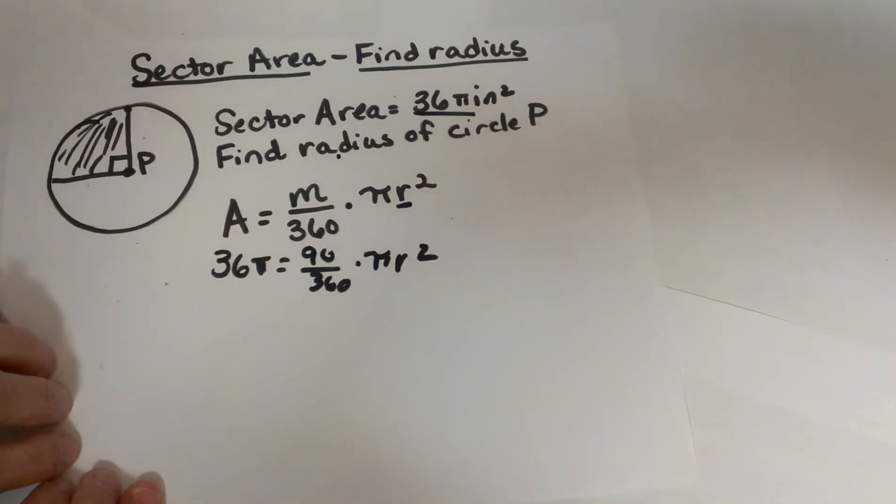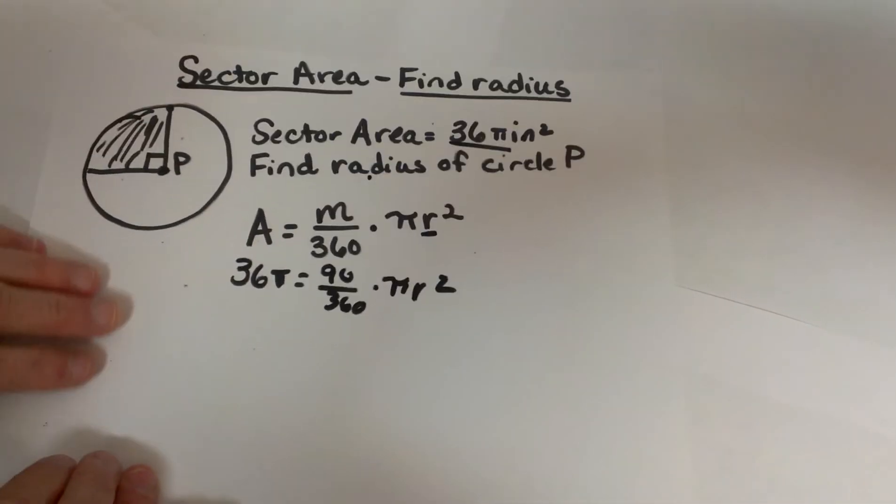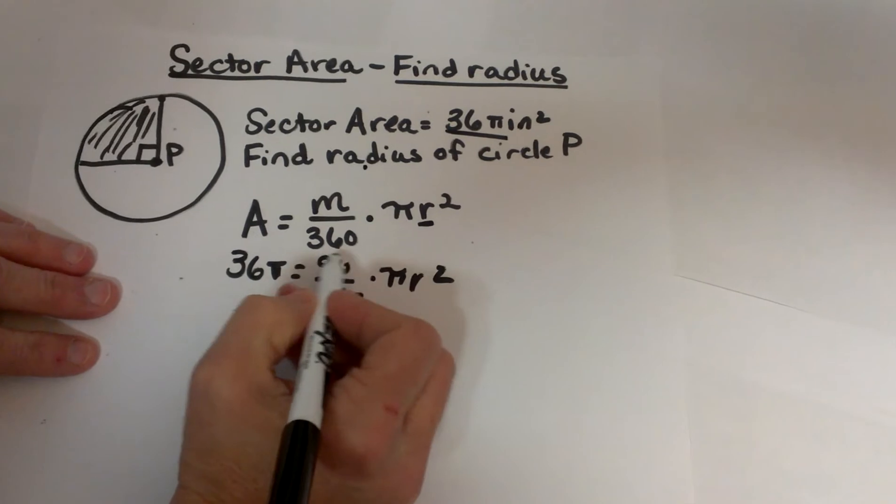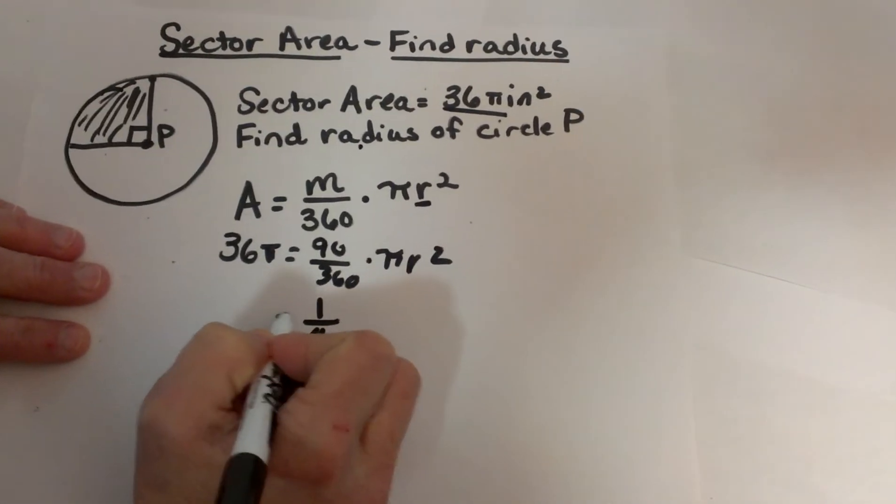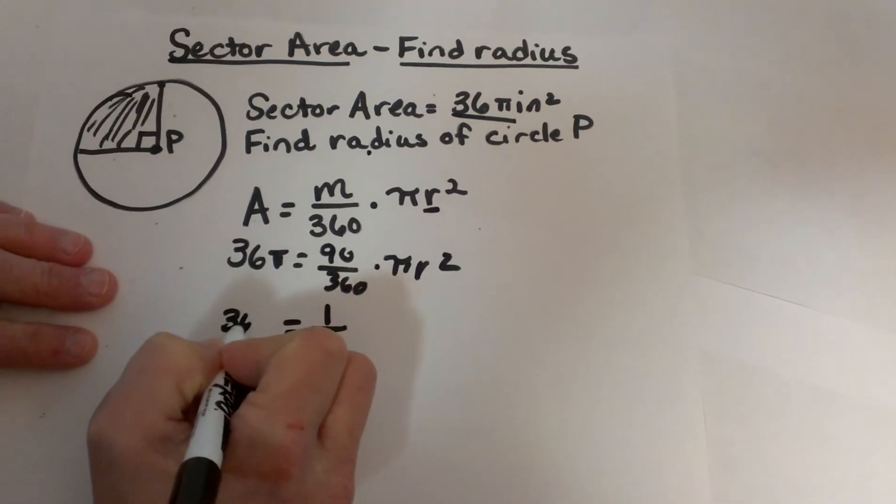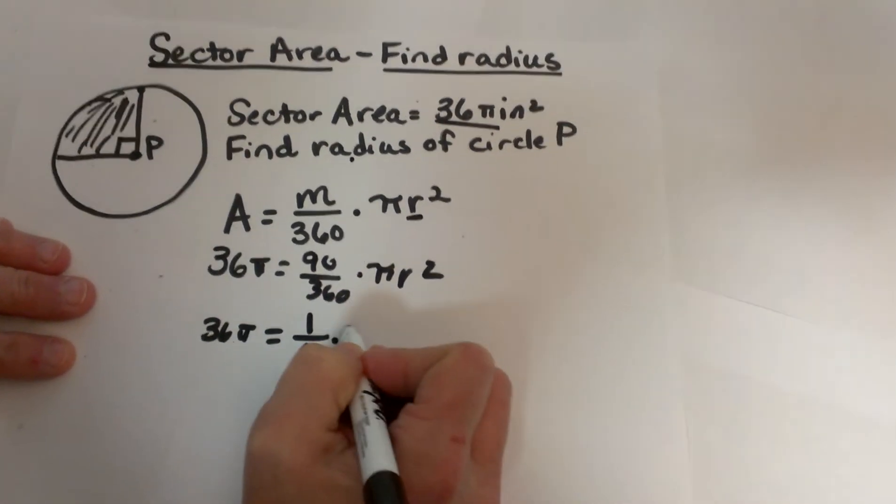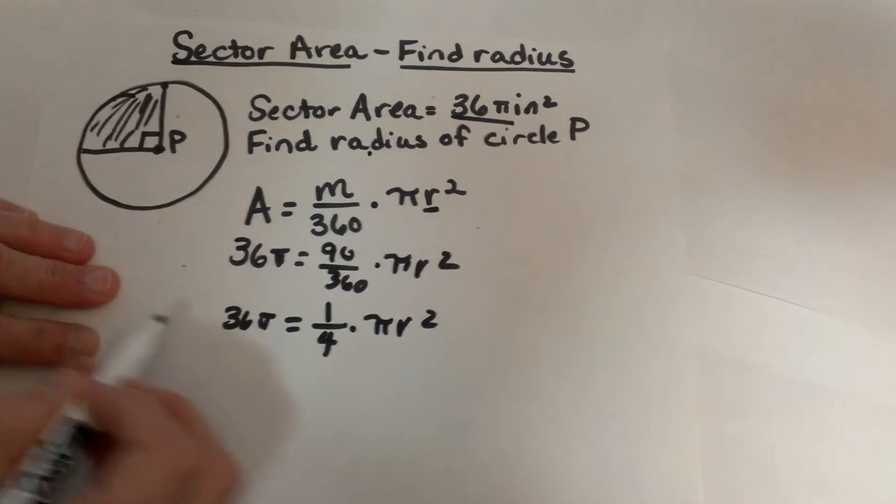Now from here I am going to clean this formula up. So let's see what we can do. 90 over 360 reduces to one fourth. I like to reduce my fractions, it just makes it a little easier to work with those numbers. Then I am going to bring the rest of the formula down.